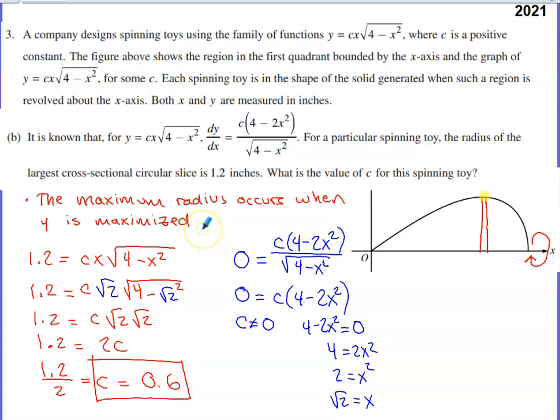So the maximum radius is going to occur when y is its largest value within the first quadrant. And that's kind of tricky to realize. You just have to visualize it and think about how the radius is related to the two-dimensional graph. And what that is going to allow you to do is recognize that if the largest radius is 1.2, I know that if I put 1.2 in place of y, that this is going to have to be true at that largest radius.